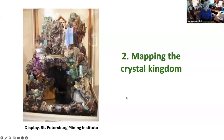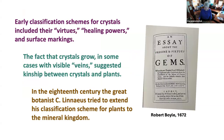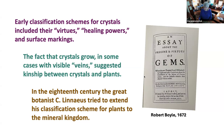The second part is talking about mapping the crystal kingdom. This has been a problem and an interesting challenge since people first noticed there were minerals and beautiful crystals. Early classification schemes for crystals included their virtues, healing powers, and surface markings — things we don't particularly consider important today in studying mineralogy. The fact that crystals grow in some cases with visible veins suggested kinship between crystals and plants, and Linnaeus tried to extend his classification scheme for plants to the mineral kingdom. This is a book from 1672 by Robert Boyle on the origin and virtues of gems.